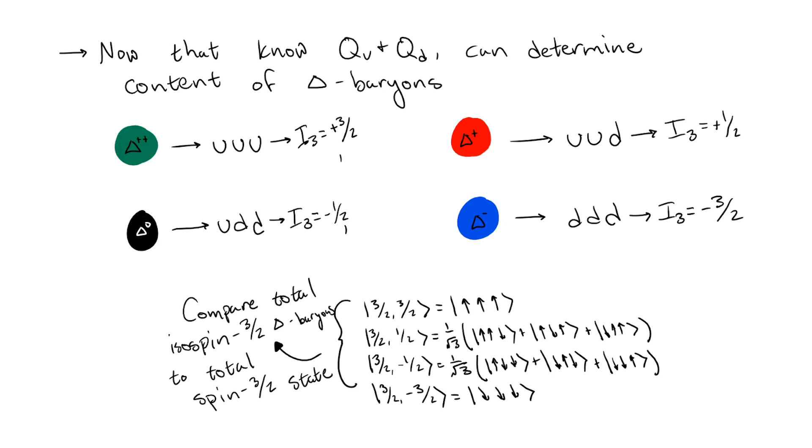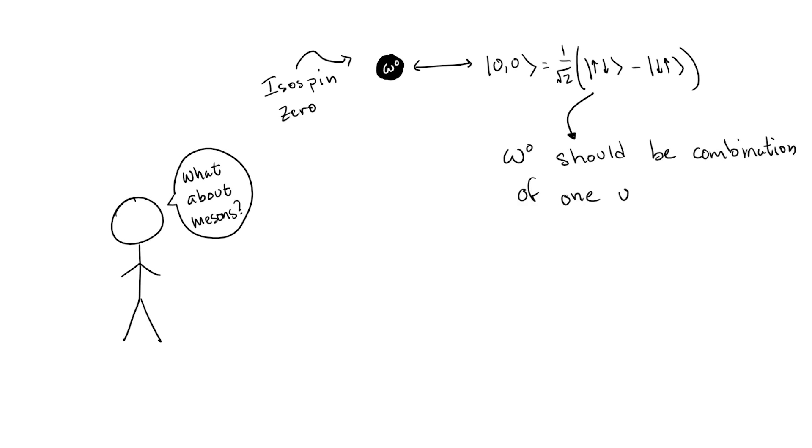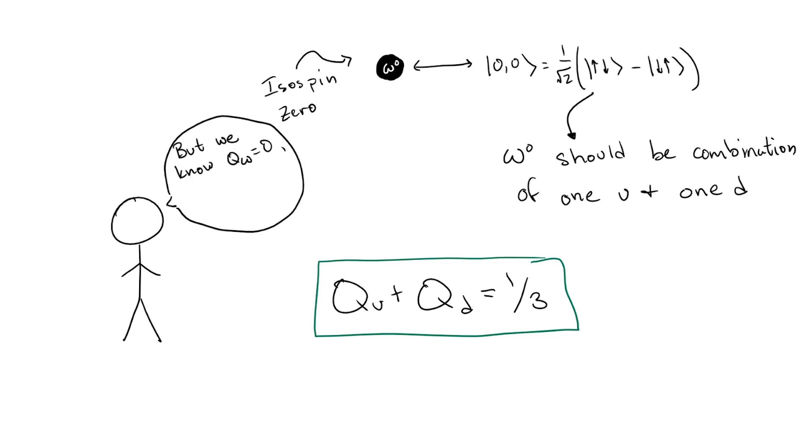However, things get a bit tricky when considering the mesons. To see this, let's look at the omega meson, which we know should be an isospin singlet. If we go by direct analogy to spin, this particle should be a combination of one up particle and one down particle. The issue is that the electric charge of this doesn't work out. This combination gives a total electric charge of plus one third, while the observed omega meson is electrically neutral. It looks like this model might be running into some problems.